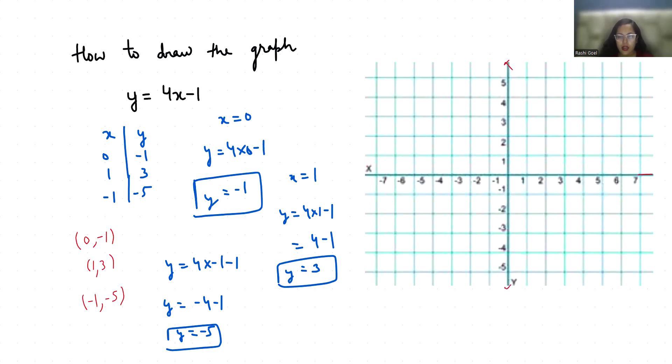Now first coordinate, when x is 0, then y is minus 1, so this is (0, -1).